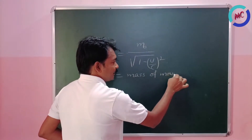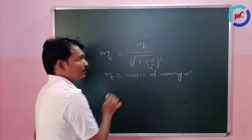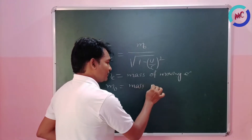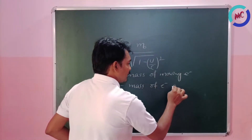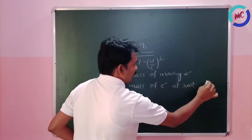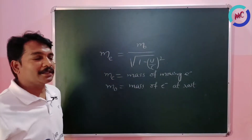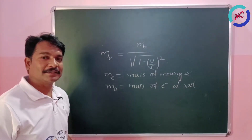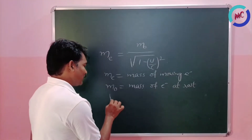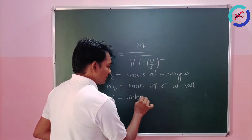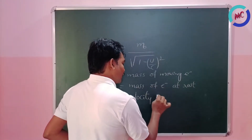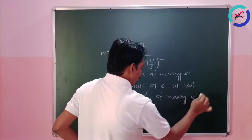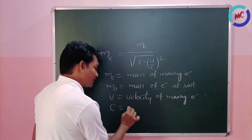Here, m₀ is the mass of the electron at rest. v is the velocity of the moving electron, and c is the velocity of light in vacuum.